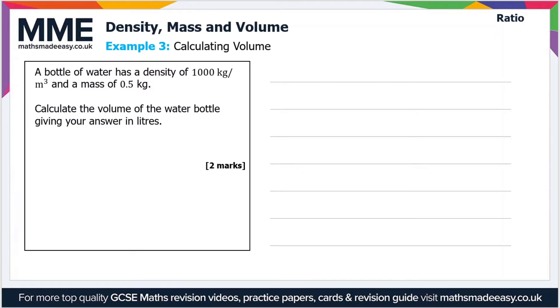This time, if I draw the pyramid out—or the triangle, whatever you want to call it—we've got density, volume, and mass. We're after the volume this time, so we've got a mass of 0.5 kilograms and a density of 1000 kilograms per meters cubed.